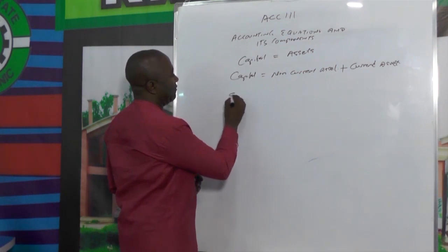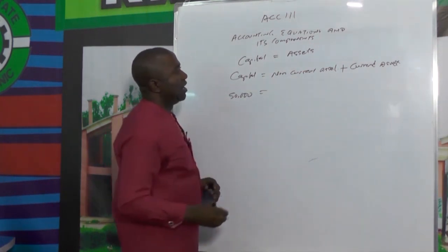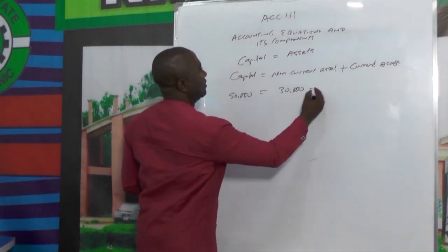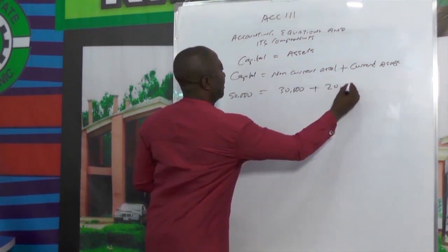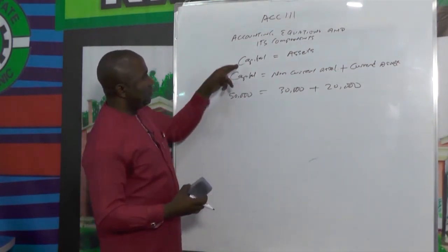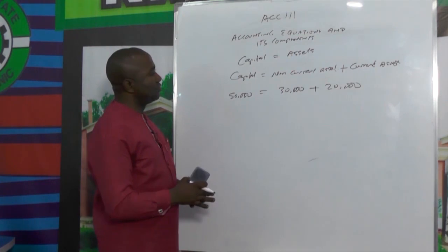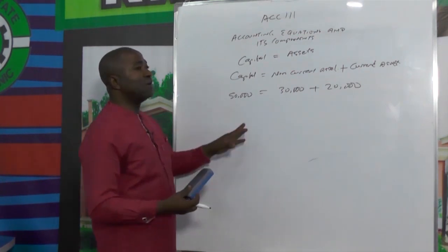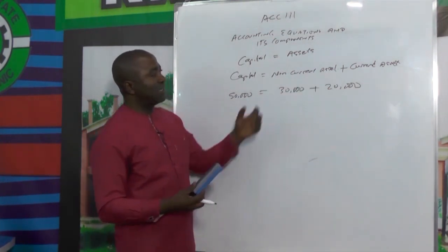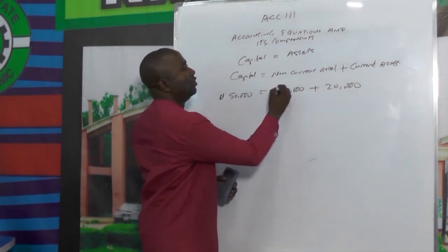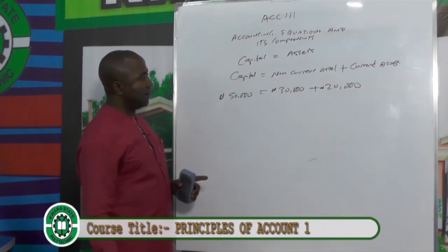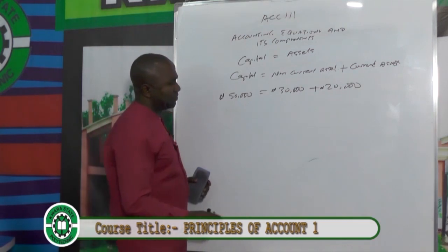Assuming we have a capital of 50,000, and our non-current asset is 30,000, then our current asset is 20,000. At every point in time this equation is balanced. Our capital is the amount we have used to start up the business. If it is 50,000, we have procured a non-current asset of 30,000 and a current asset of 20,000, giving us 50,000. So the equation is balanced.